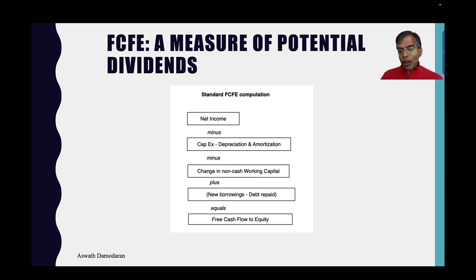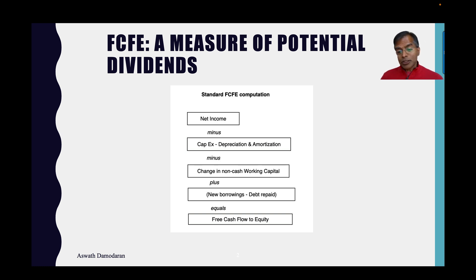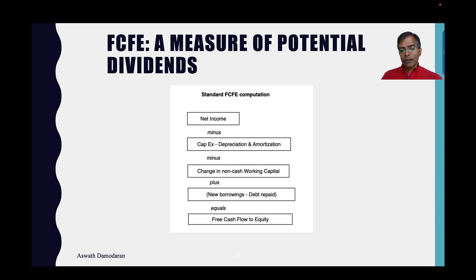So: net income, minus net capex, minus change in working capital, plus net borrowing if you're borrowing money to cover some of your needs. But remember, in some years you might repay more than you borrow, so it could be a minus in those years. That equals free cash flow to equity.